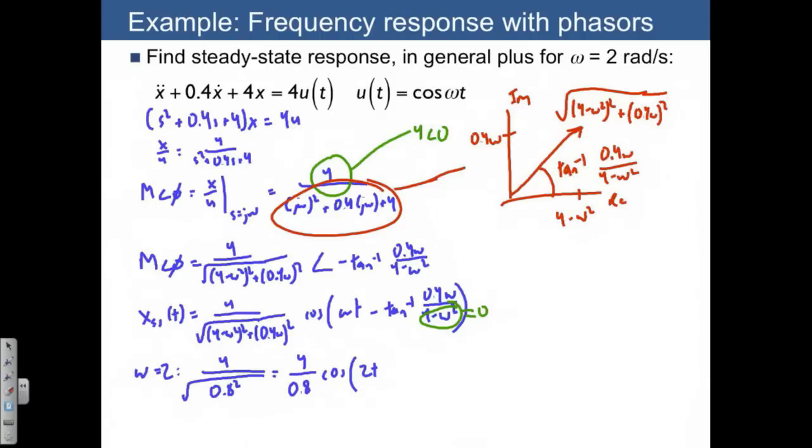And how do we know this? When the arctangent of infinity, let me just plot the arctangent function. So if you have x, the arctangent of x approaches 90 degrees when x goes to infinity. So what we end up with is cosine of 2t minus 90 degrees.